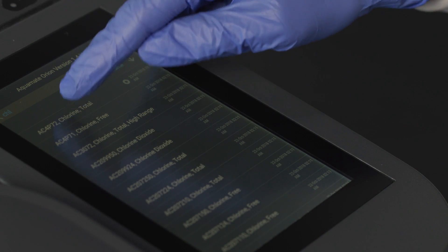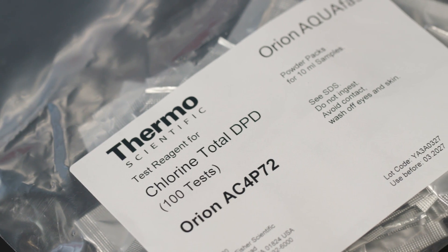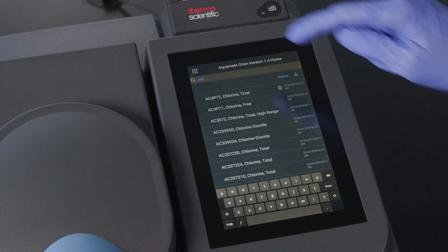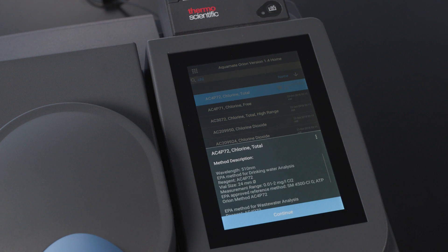Alternately, I could type in the reagent part number from the package. At this point, we can select method AC4P72, which matches the catalog number of my reagent.